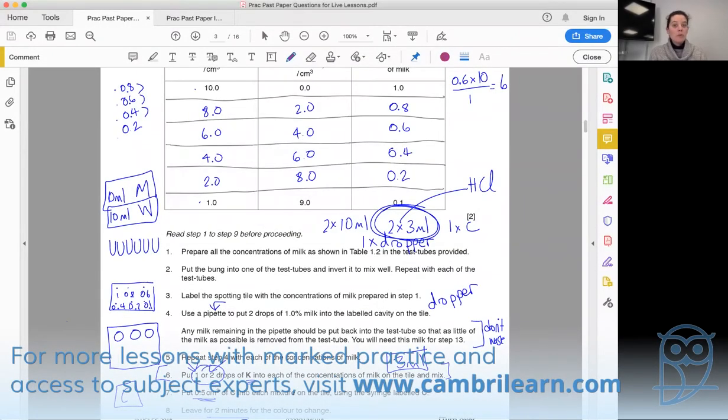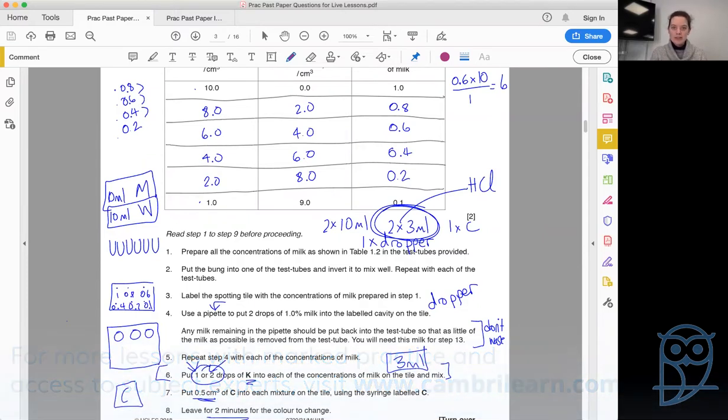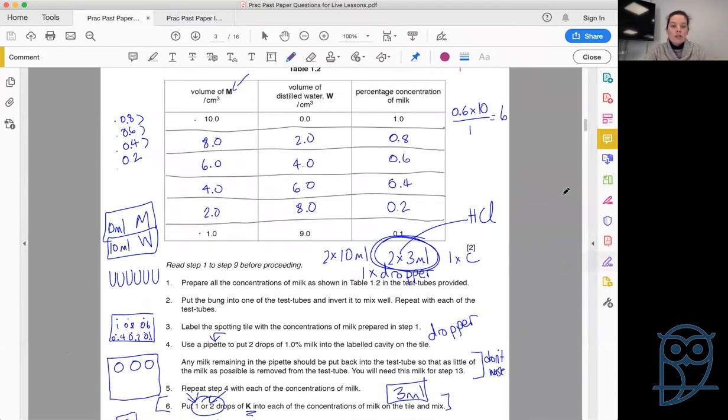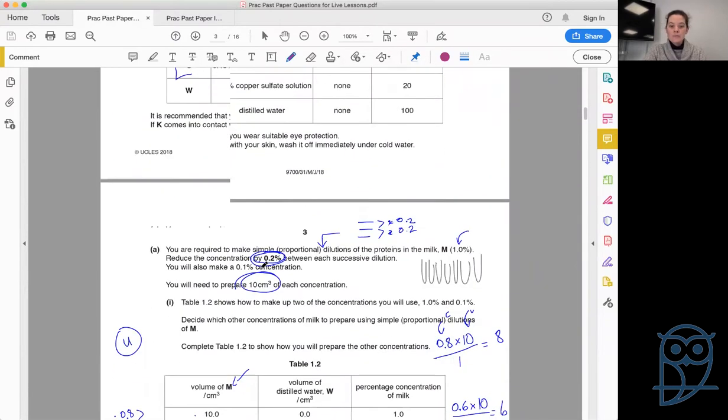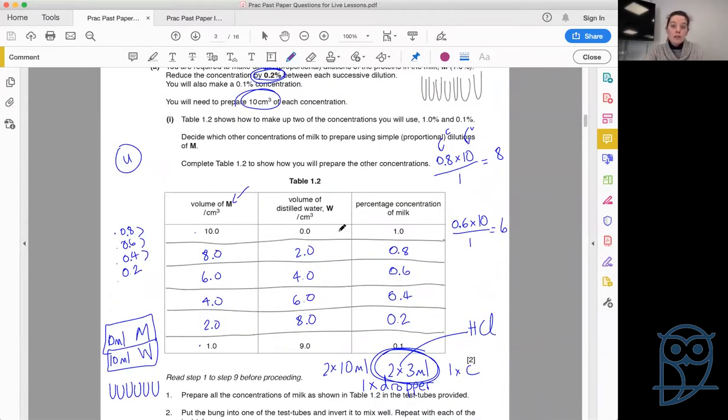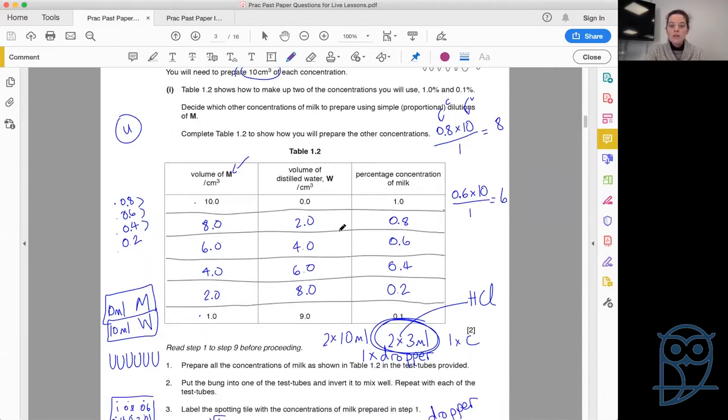We're carrying on with the paper we were working with last time when we looked at using a past paper for revision for a practical. Even though we're not doing the actual practical, there's a lovely way that we can use these papers to still get good experience. We went through the introduction and determined that we are looking for an unknown concentration of protein in milk. We're given a known concentration and work through doing simple dilution to figure out concentrations we'd be working with.